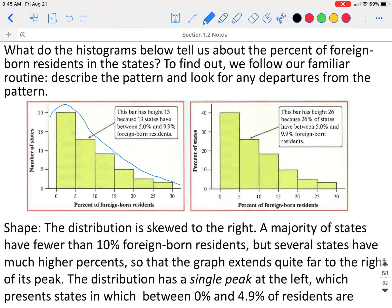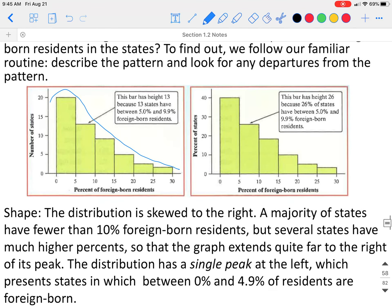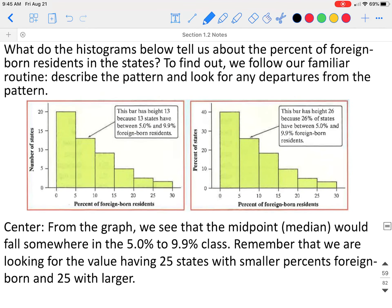A majority of states have fewer than 10% foreign born residents, but several states have much higher percents. So the graph extends quite far to the right of its peak. The distribution is single peaked at the left, which represents states that are between 0 and 4.9% of the residents are foreign born.